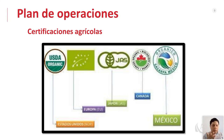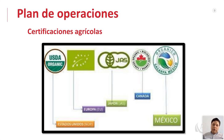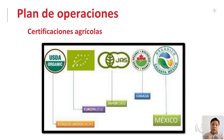Hay dos costos importantes al implementar un producto orgánico: uno es implementar parte del plan de operaciones con insumos orgánicos, y el otro es el costo de la certificadora que viene y te certifica, que está entre 500 y 1,000 dólares. Cumples con todo el proceso, va una certificadora, valida y te otorga el certificado. Con ese logo lo puedes poner en tu empaque, en tu página web y al reunirte con clientes. El producto orgánico tiene un precio mayor que los convencionales, por lo que tu comprador ya lo sabe.